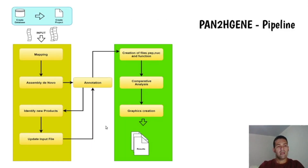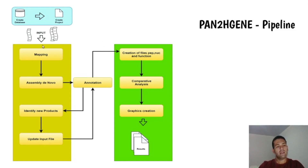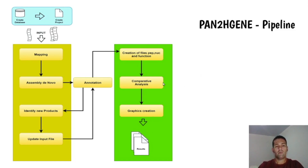The pipeline is divided into two steps. In the first step, new gene products are identified that are absent from the original sequence. In the second step, a comparative analysis is performed.